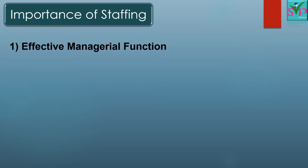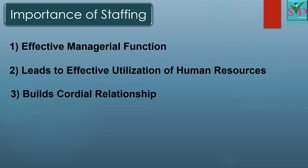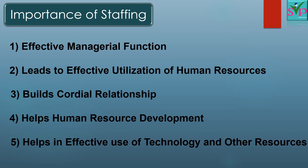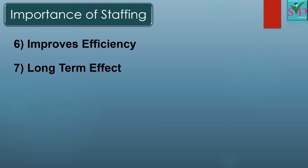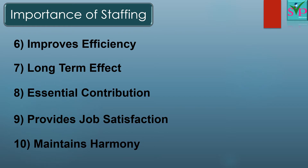The points are: 1. Effective managerial function. 2. It leads to effective utilization of human resources. 3. Builds cordial relationship. 4. Helps human resource development. 5. Helps in effective use of technology and other resources. 6. Improves efficiency. 7. Long-term effect. 8. Essential contribution. 9. Provides job satisfaction. 10. Maintains harmony. Now let us study all the points one by one in detail.